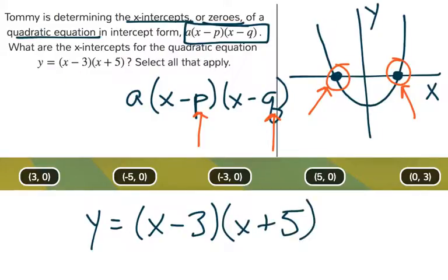Now the a right here actually is a 1, since there's no number in front of the parentheses. So a is 1. And then we need to identify p and q. That'll tell us what the x-intercepts are.